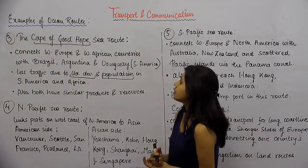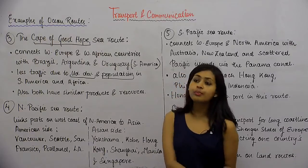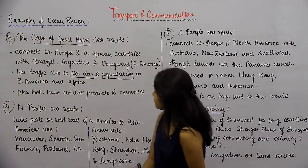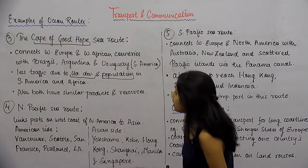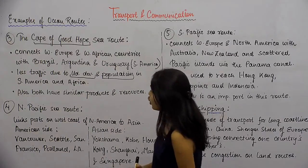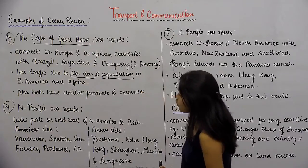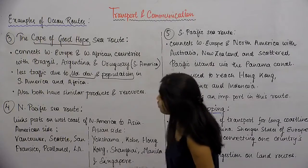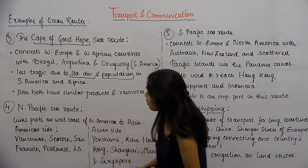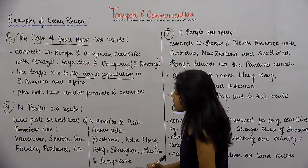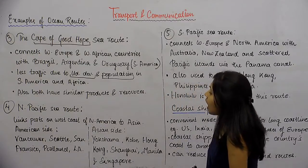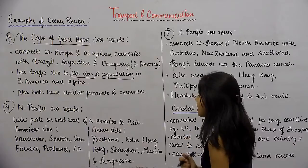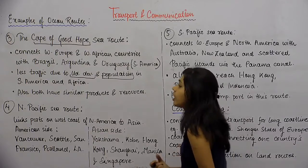So it is an important sea route, but it's not a very significant trade route. That's all about the Cape of Good Hope. The next one is the North Pacific Sea Route. This is the North Pacific sea route.